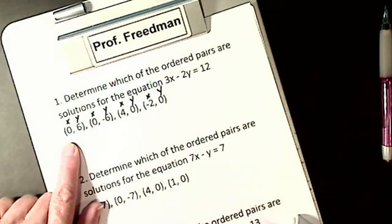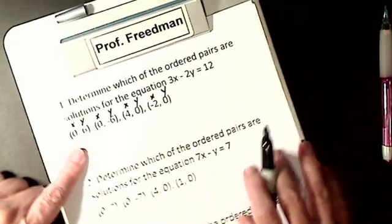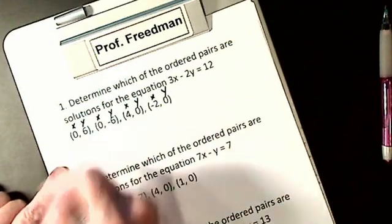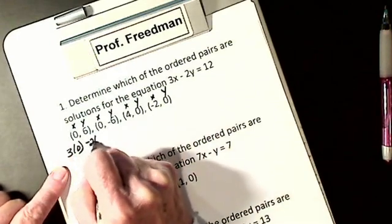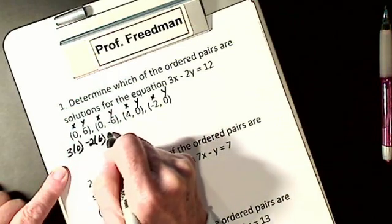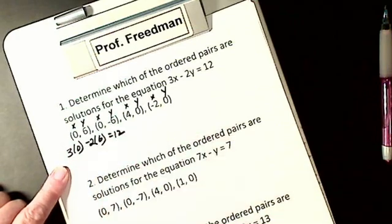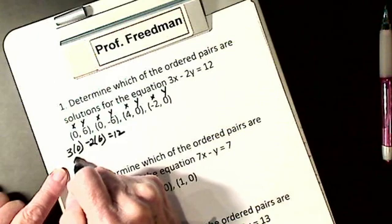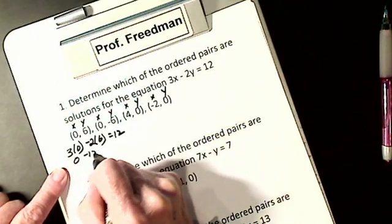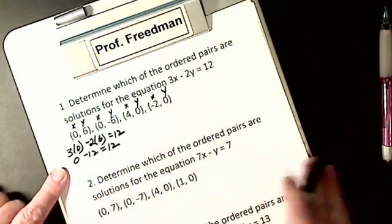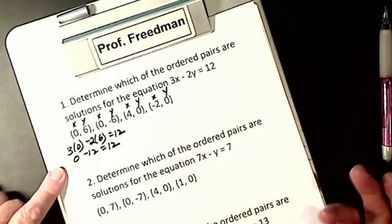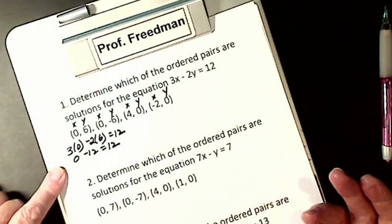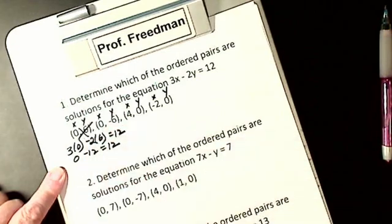If it works out, it's a solution; if it doesn't, it is not. So we substitute in: 3 times 0 minus 2 times 6 equals 12. Zero times anything is 0, so I get negative 12 equals 12, which is not true. Negative 12 is not positive 12, so this one is not a solution.